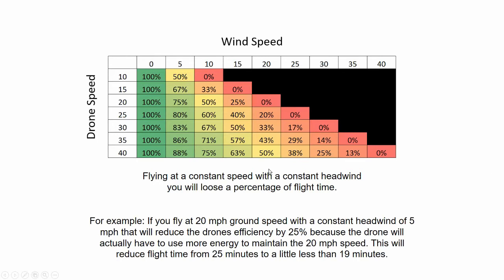Next is wind speed. Drone speed is on the left — 10 miles per hour all the way up to 40 — and wind speed at the top, zero all the way to 40 miles per hour. For example, flying at 20 miles per hour with a headwind of 5 miles per hour, you will only get 75% efficiency out of that battery — a 25% drop — because the drone uses more energy to maintain that speed. This reduces your flight time from 25 minutes to a little less than 19 minutes. As wind speed goes up, your efficiency drops.